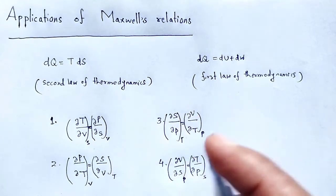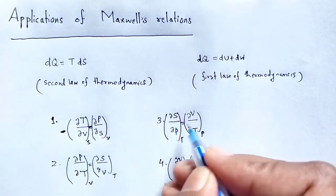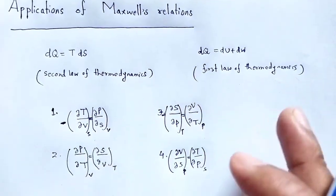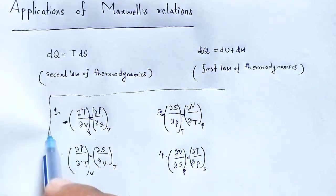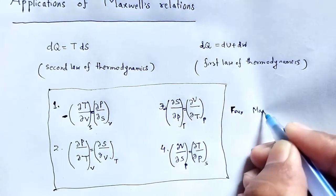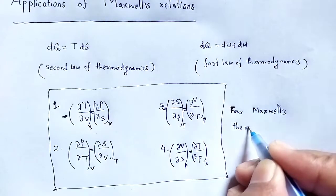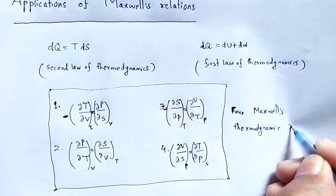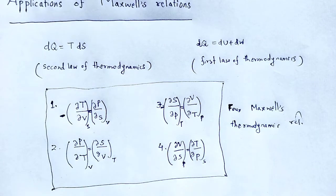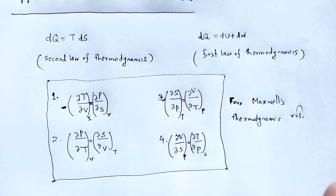Now, the negative sign: where T and V appear, there is a negative sign. T and V together also carry a negative sign. These are the four Maxwell's thermodynamic relations. Using these thermodynamic relations, we derive many formulas or describe various types of thermodynamic phenomena — these are known as the applications of Maxwell's thermodynamic relations.